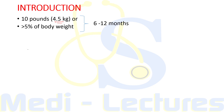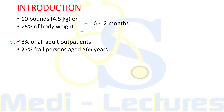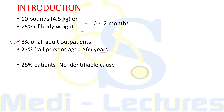Considering the epidemiology, unintentional weight loss is encountered in up to 8% of adult outpatients and around 27% of frail persons who are aged more than 65 years. There is no identifiable cause in up to 25% of patients despite extensive evaluation. Also while investigating, always keep in mind that some patients use this term as a non-specific symptom to get the attention of the doctor and have no documentation or evidence of weight loss.